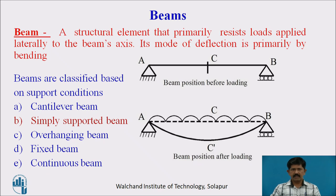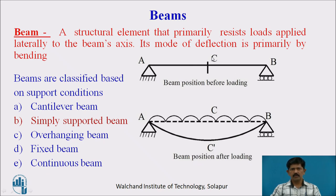A beam is a structural element that primarily resists the loads applied laterally to its axis. Its mode of deflection is primarily by bending. So this is the axis of the beam and the load is applied lateral to the beam axis, and this is resisted by the bending action.